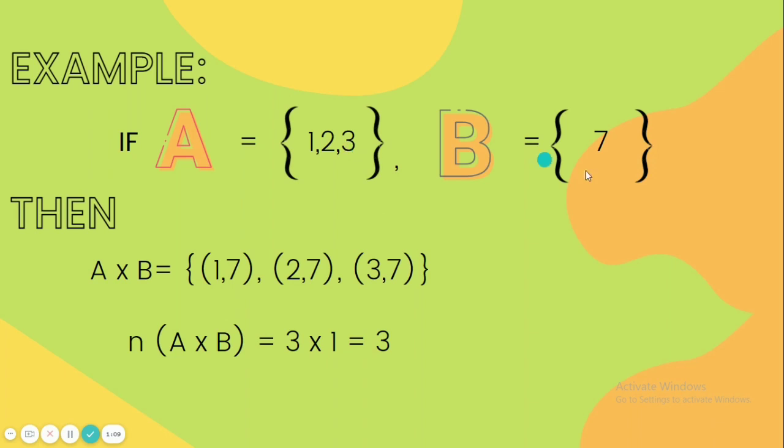Then lastly, (3,7). And if we total all the ordered pairs, we will have a total of 3, since there are 3 in set A and 1 in set B. And 3 times 1 equals 3.